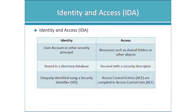Let's dig into Identity and Access more deeply. An identity is a user account or other security principal, such as groups and computers. Those identities access resources like shared folders, databases, Exchange mailboxes, or web applications. Identities are stored in a directory database and uniquely identified using a SID — a Security Identifier. The object SID is how the system uniquely identifies each identity.